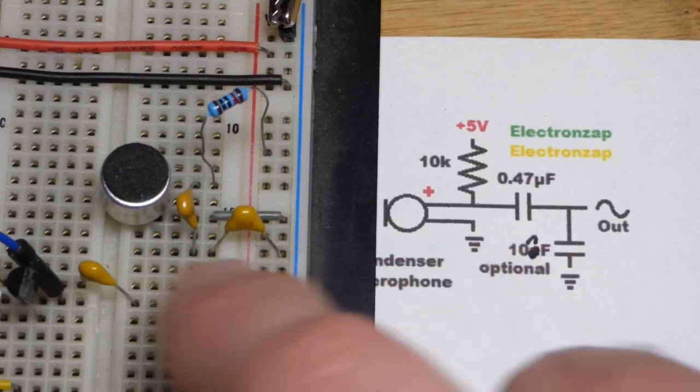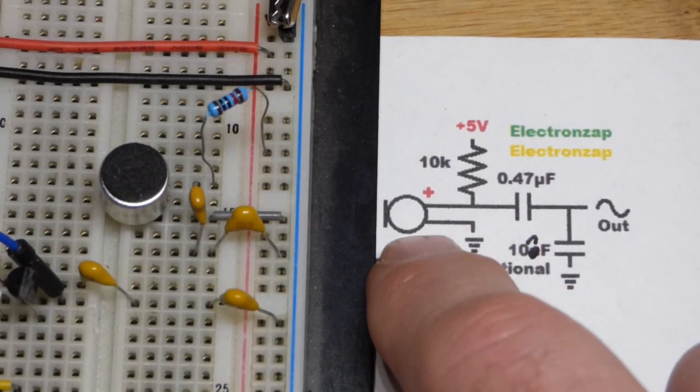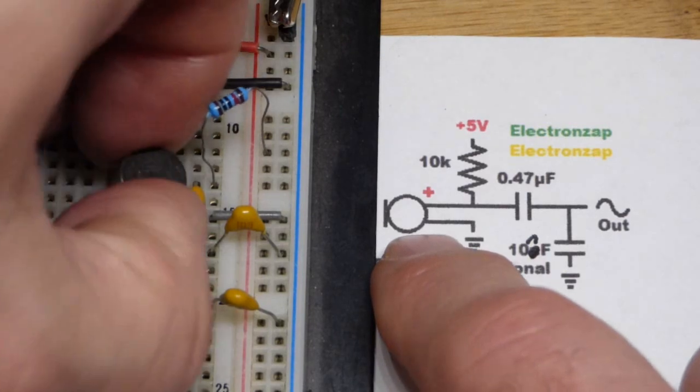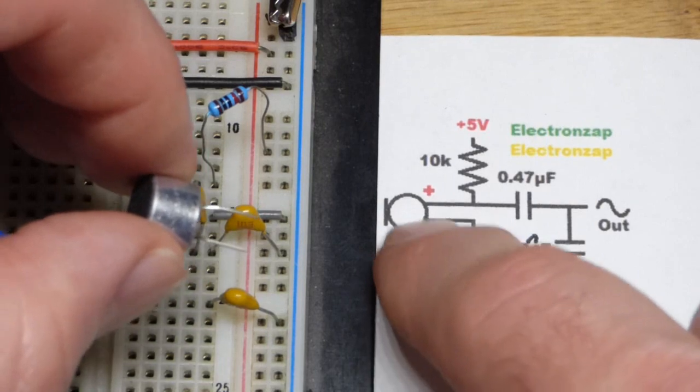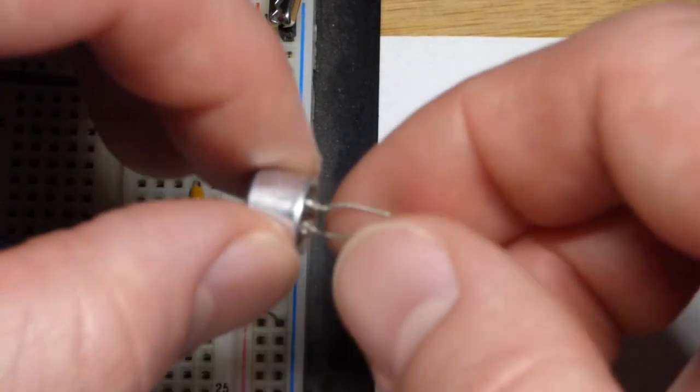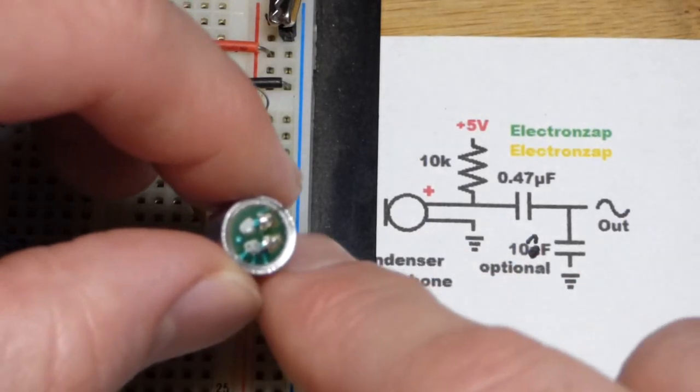We have the coupling capacitor right here. And before we get to that, we got the microphone there. There may not always be a plus symbol there, and I don't know what all symbols you might see for a microphone or a condenser microphone. That's kind of the one I like the most.